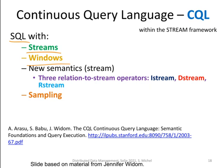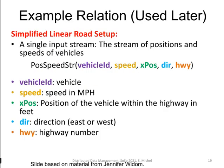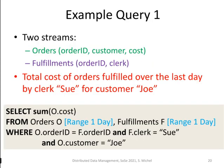There are three relation-to-stream operators: istream, dstream, and rstream, and there's also the possibility for sampling. We will walk through that in a few minutes. Here is once more the relation with vehicle ID, speed, and so on. We will also use that later on in some queries.